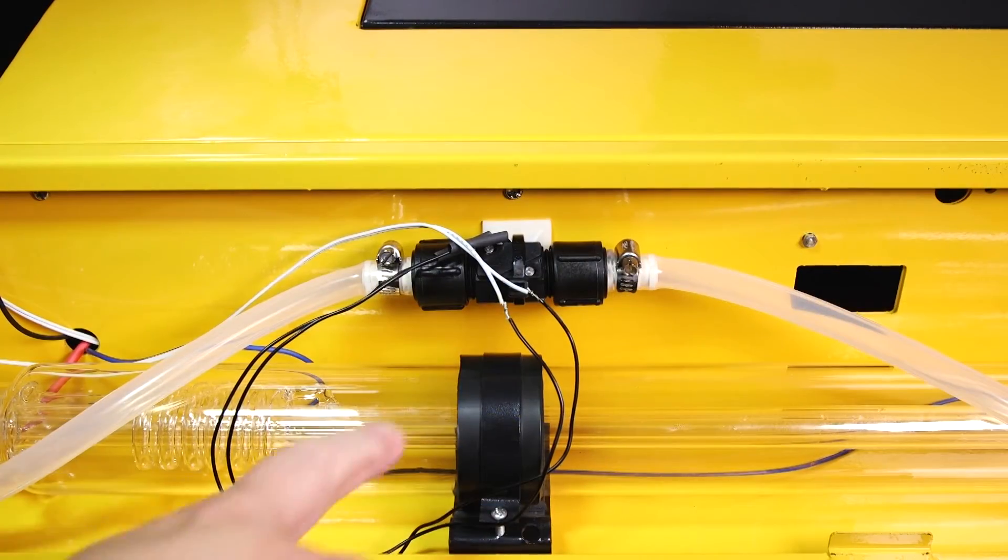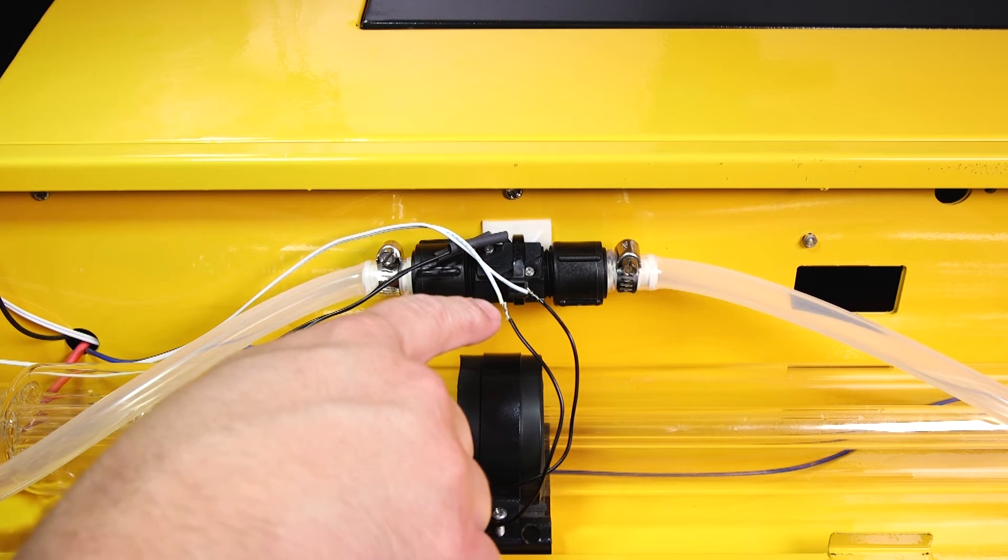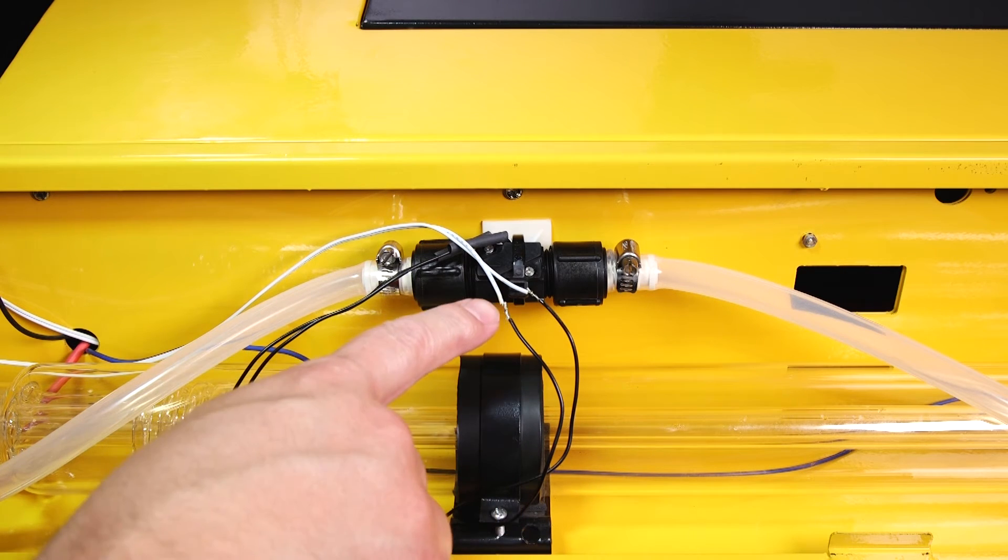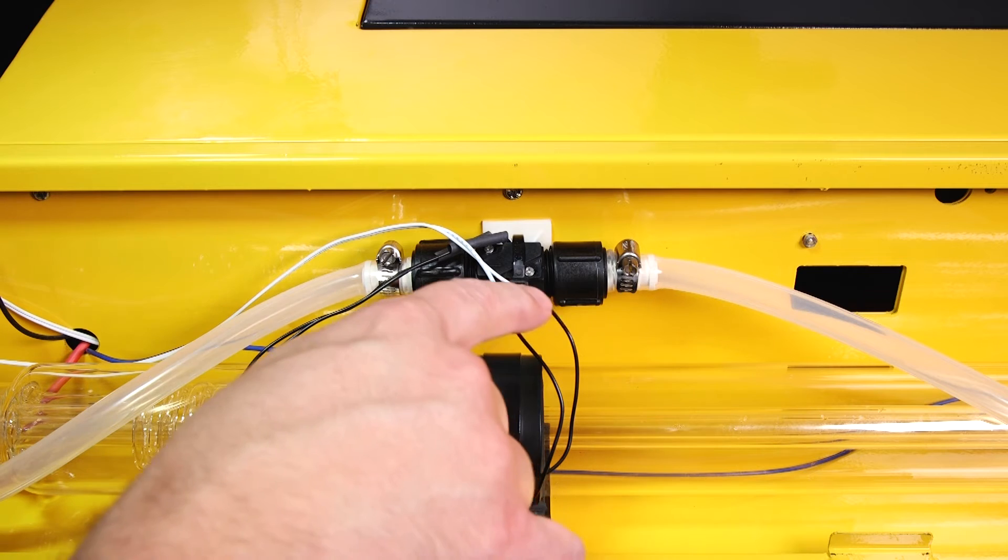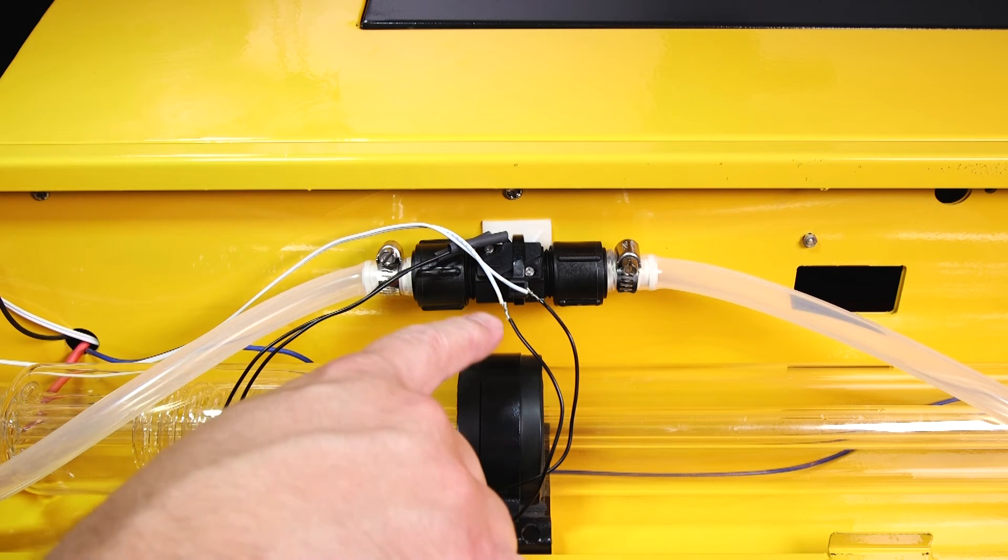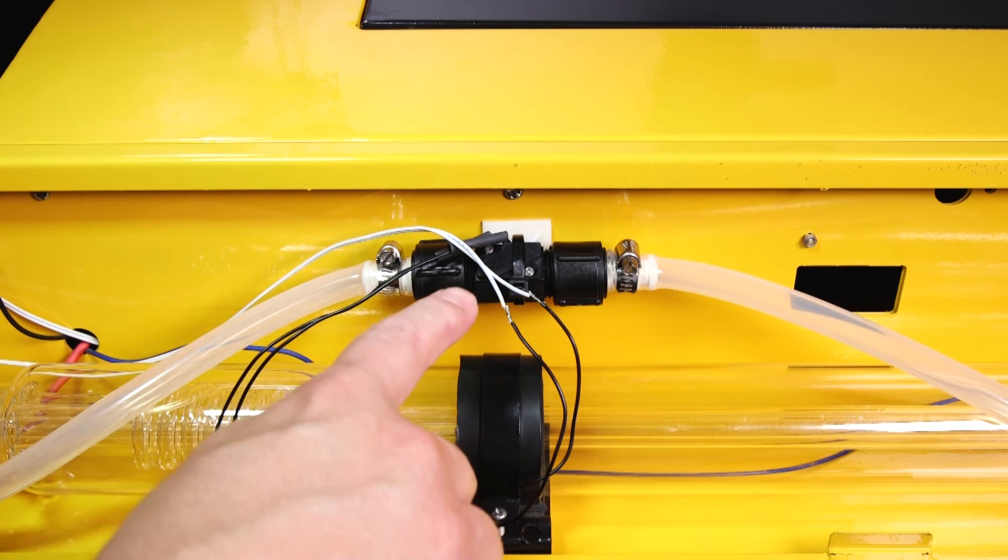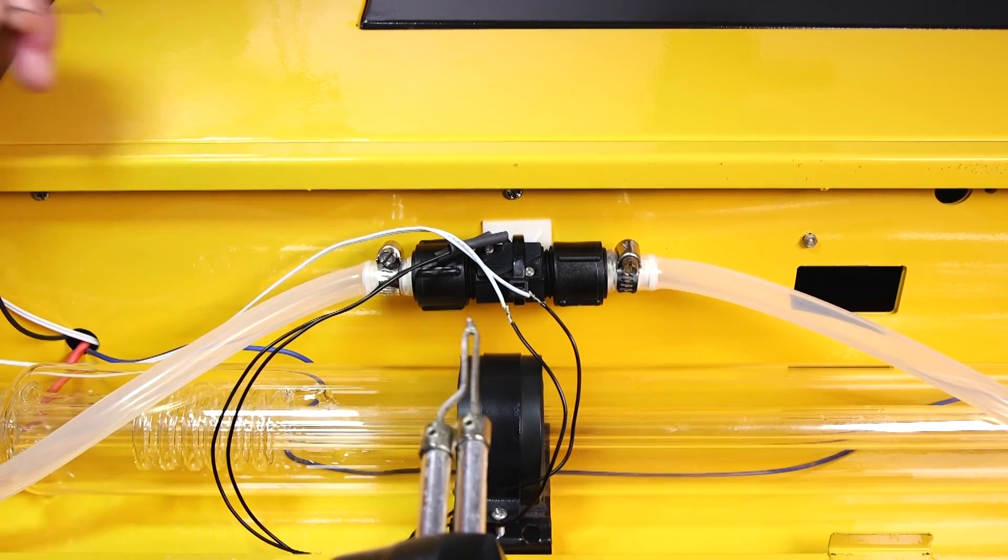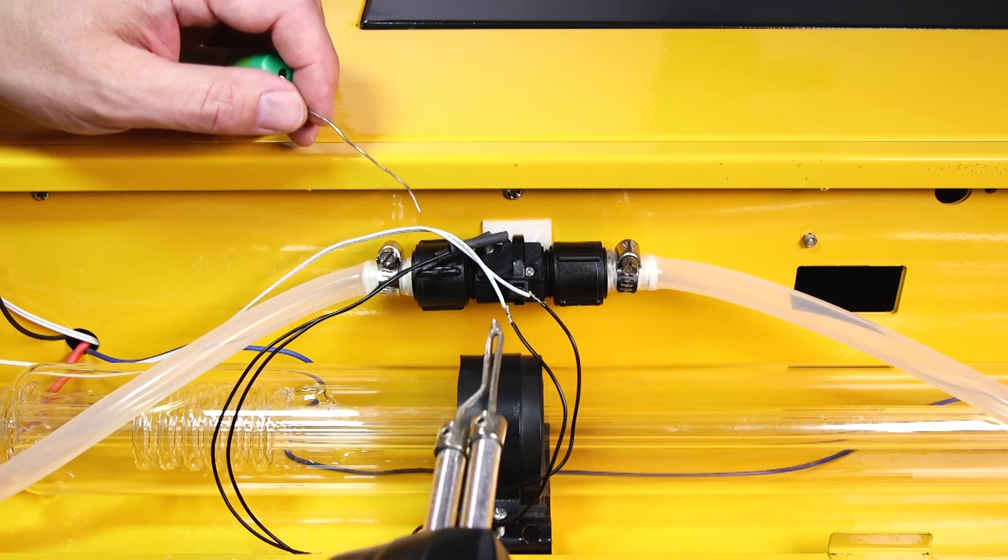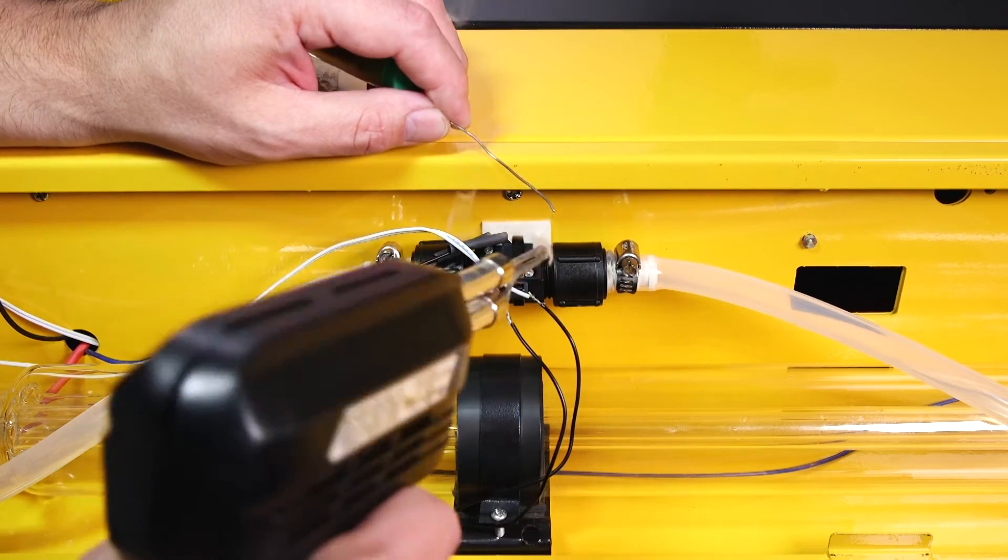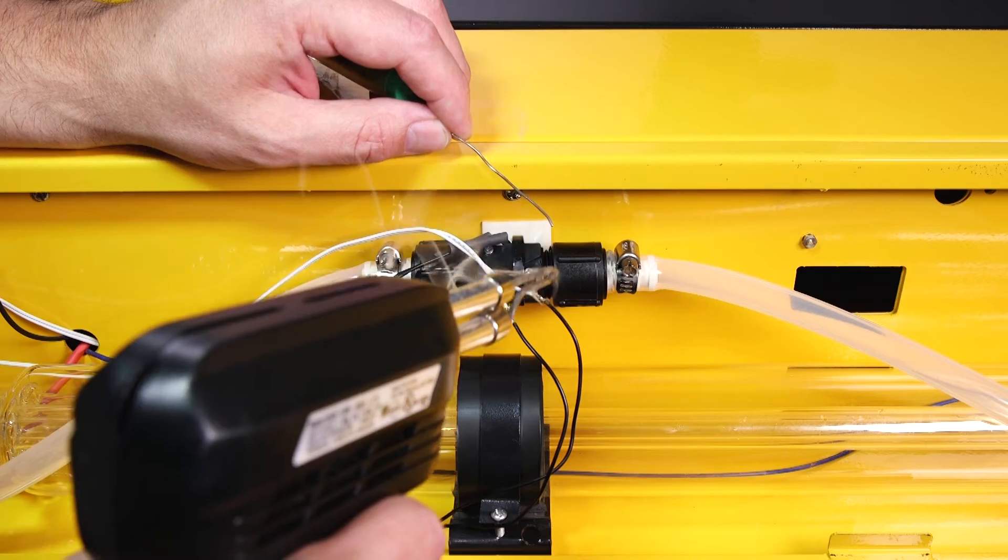The next thing I'm going to do is attach the electrical wires for the water flow switch. I've already twisted the ends of the wires from the new water flow switch to the ends of the wires coming from the machine that we cut previously. I've also applied flux to these wires to prepare them for soldering. Using my solder gun I'm going to solder these wires together.